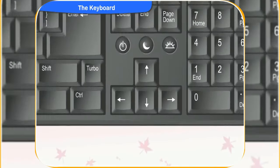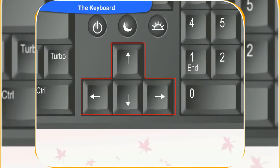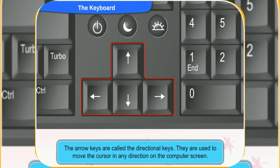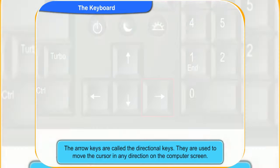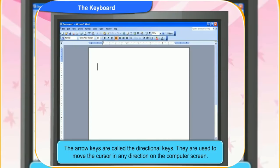What are these arrow keys for Clicko? The arrow keys are called the directional keys, used to point to direction — up, down, left and right. They are used to move the cursor in any direction on the computer screen.